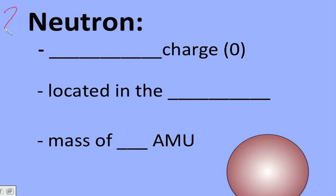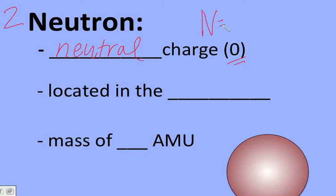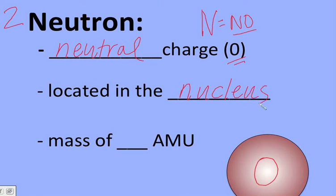Our second atomic particle is the neutron. The neutron has a neutral charge — no charge at all. The hint here: N in neutron stands for neutral, or no charge. Similarly to the proton, we can also find the neutron in the center, or nucleus, of the atom. It also has the same mass as the proton — 1 AMU.